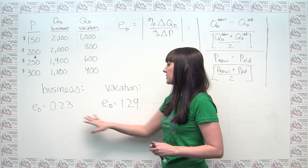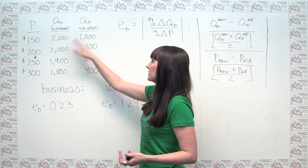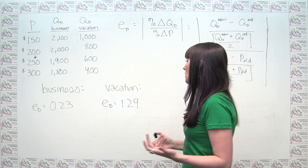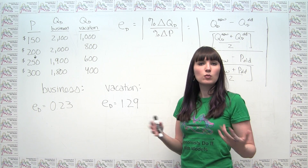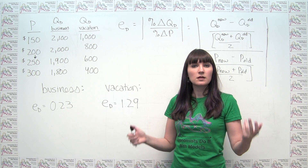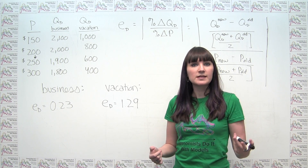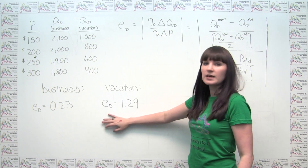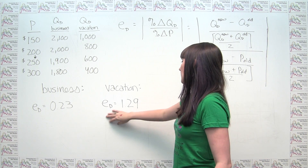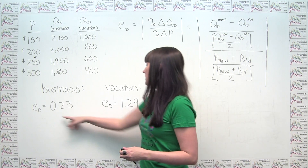Part B asks us to examine why business and vacation travelers might have different elasticities of demand. One key determinant is that necessities tend to have lower price elasticity of demand than luxuries. For the business traveler, they may not really have a choice — missing a client meeting is a big deal, so this trip is more of a necessity. The vacation traveler is presumably viewing their trip as a luxury, and luxuries tend to have more elastic demand. So it's not surprising we see this difference.